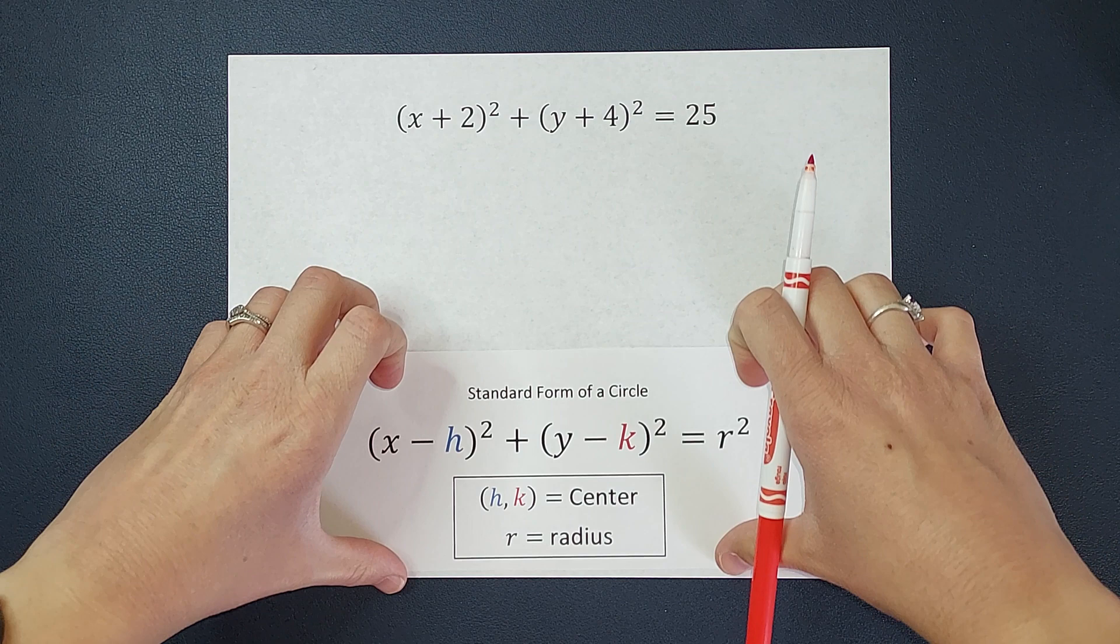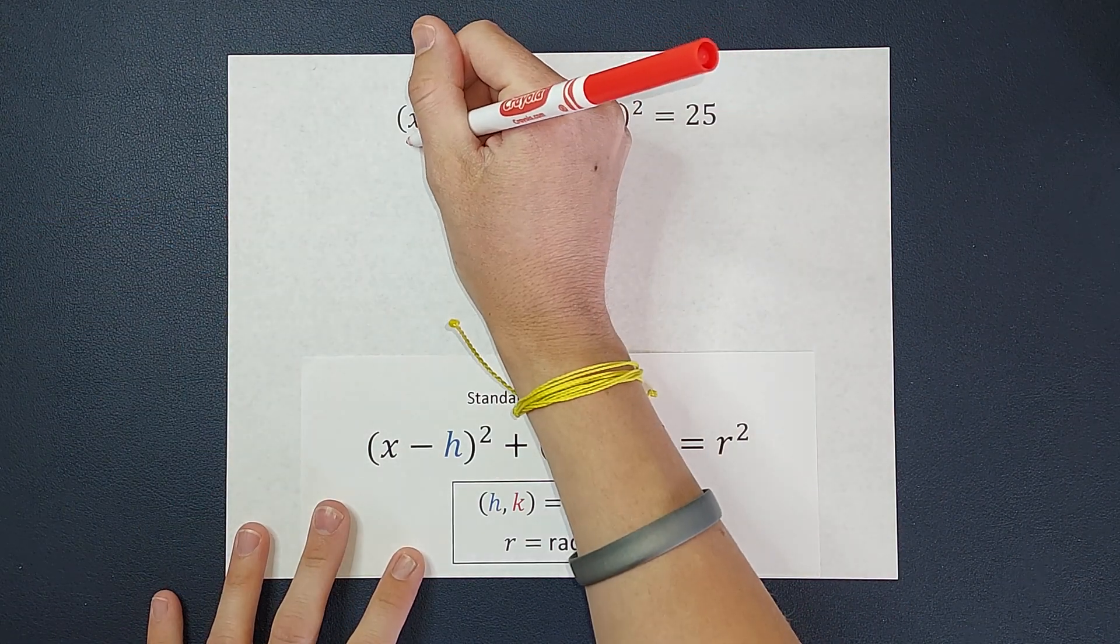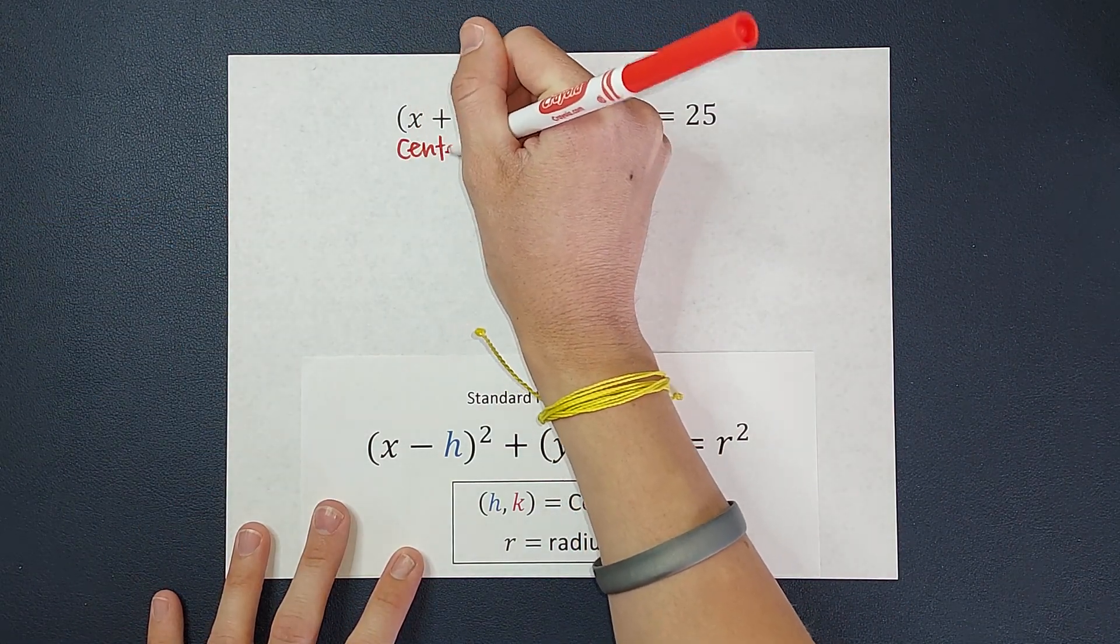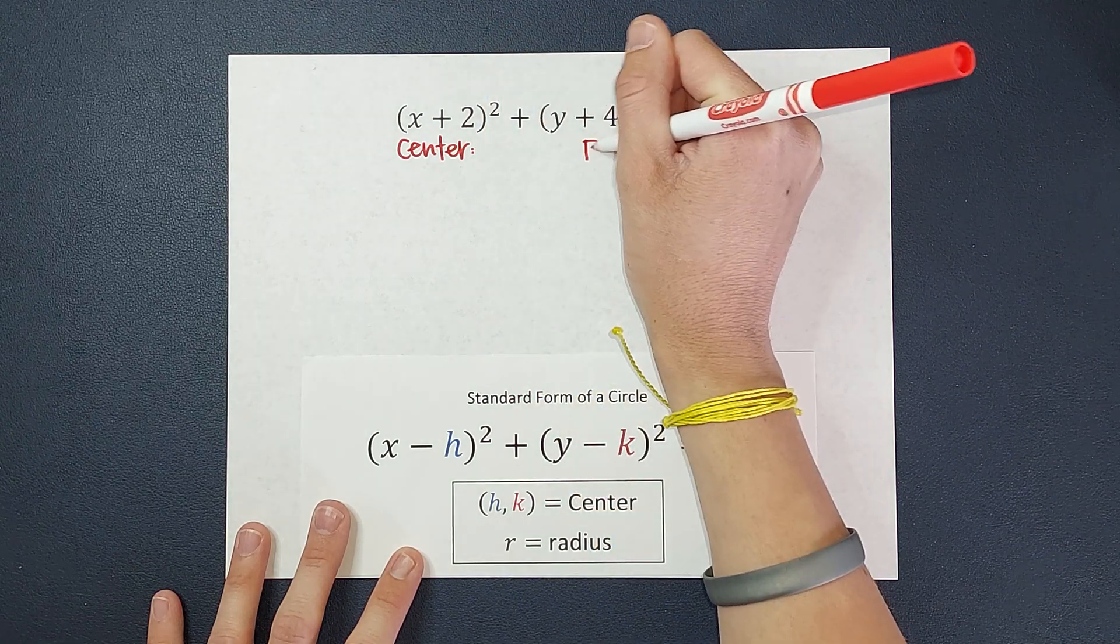So in order to graph this circle, what I need to know is my center and you probably guessed it, my radius.